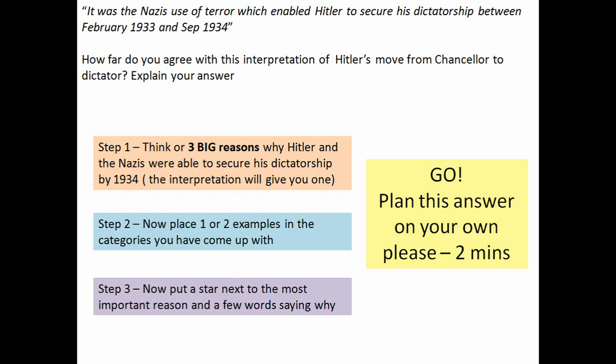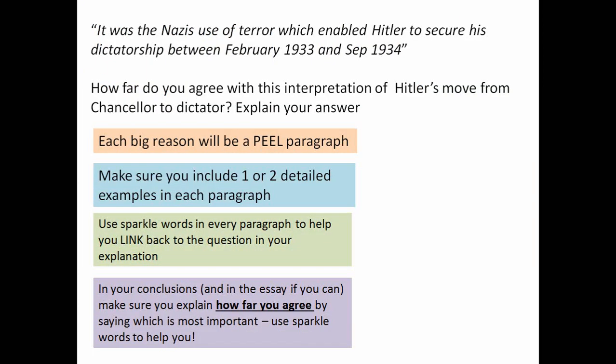Okay, so you've written your plan — that means you've got your three big reasons and you're ready to go. You're probably thinking: what's the process I have to follow? For each of those big reasons, you're going to write one PEEL paragraph. So your Point is a big reason, then give an Example or two, and then Explain how that example helped Hitler secure his dictatorship.